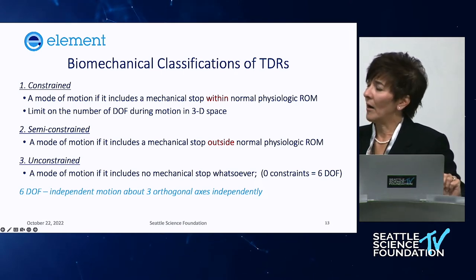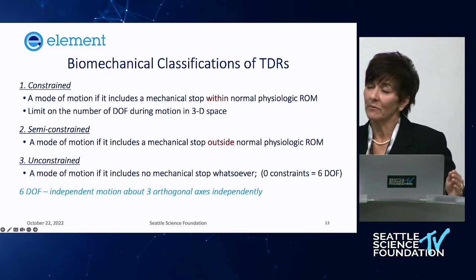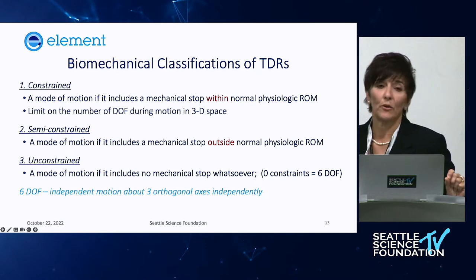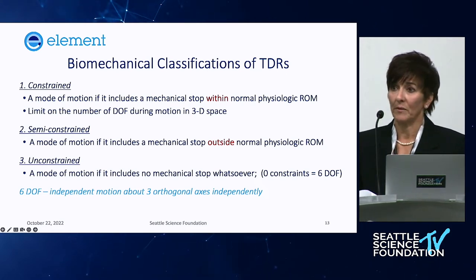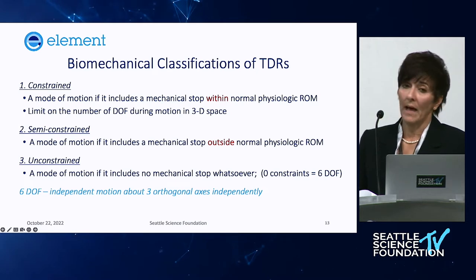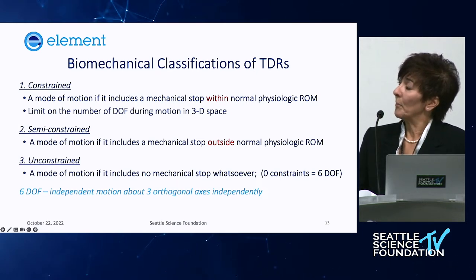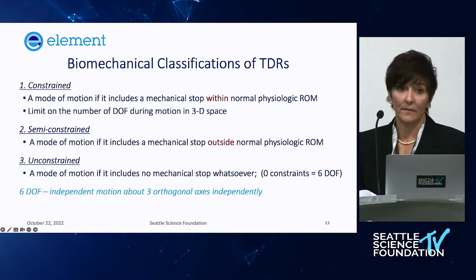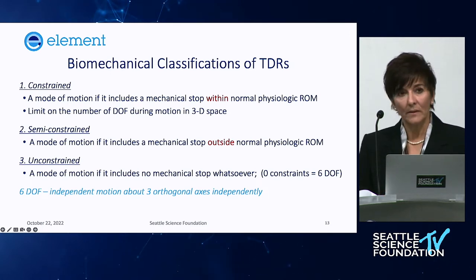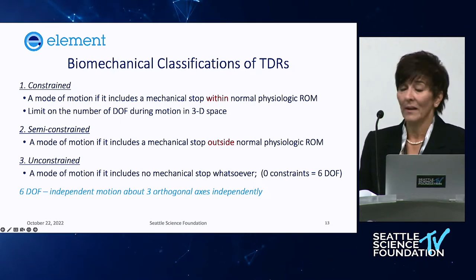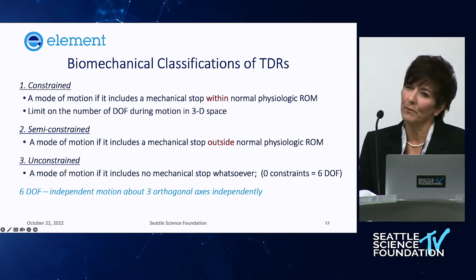Unconstrained is defined as a mode of motion with no mechanical stop whatsoever — but that's a very generic definition. It's called zero constraint, meaning six degrees of freedom: translation in AP and medial-lateral planes, axial rotation, lateral bending, and flexion-extension. The additional degree of freedom that ball-and-socket or constrained designs lack is compression and tension. However, I question that, because some elastomeric discs can be very stiff — so how much compression and tension are you really getting?